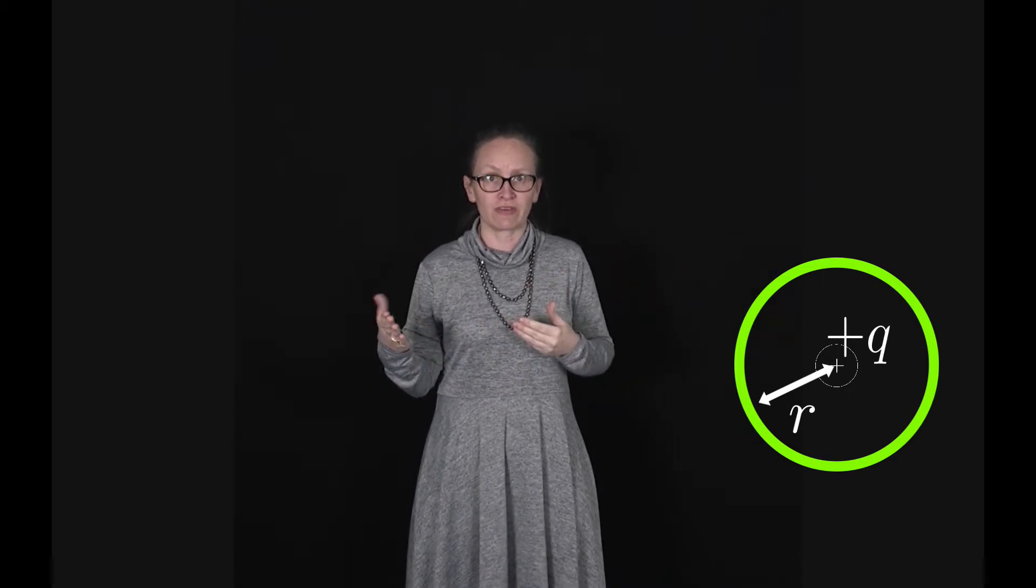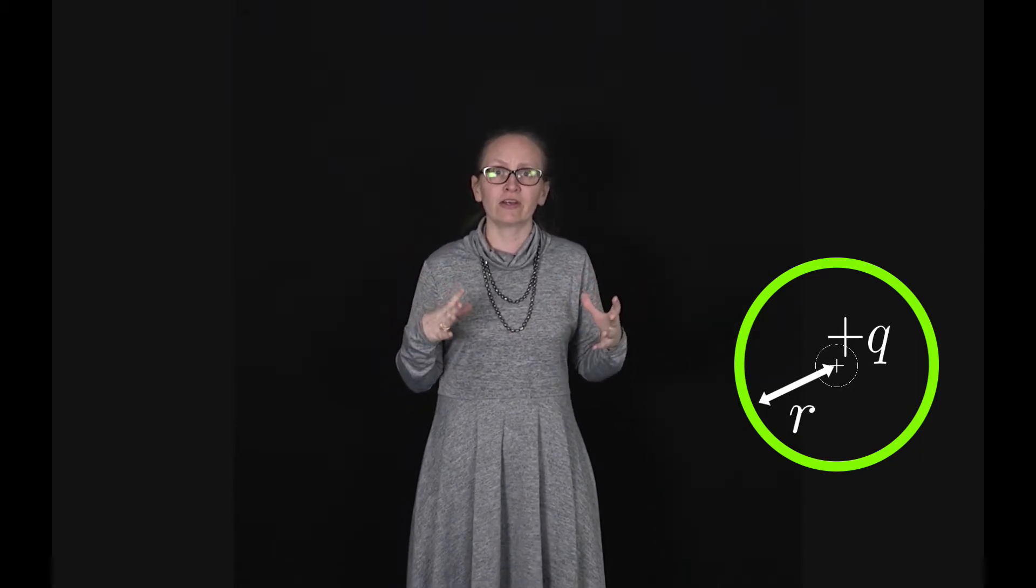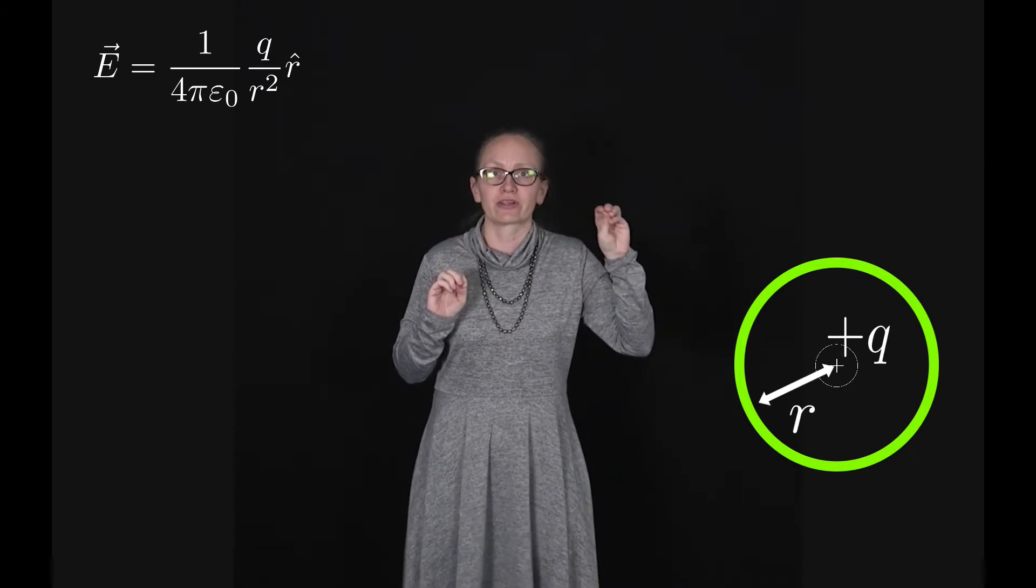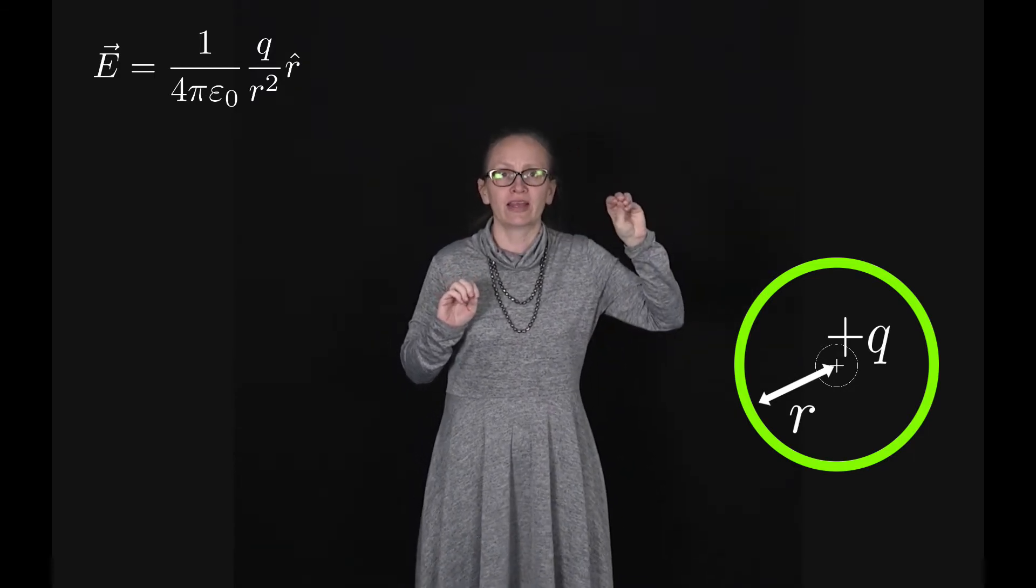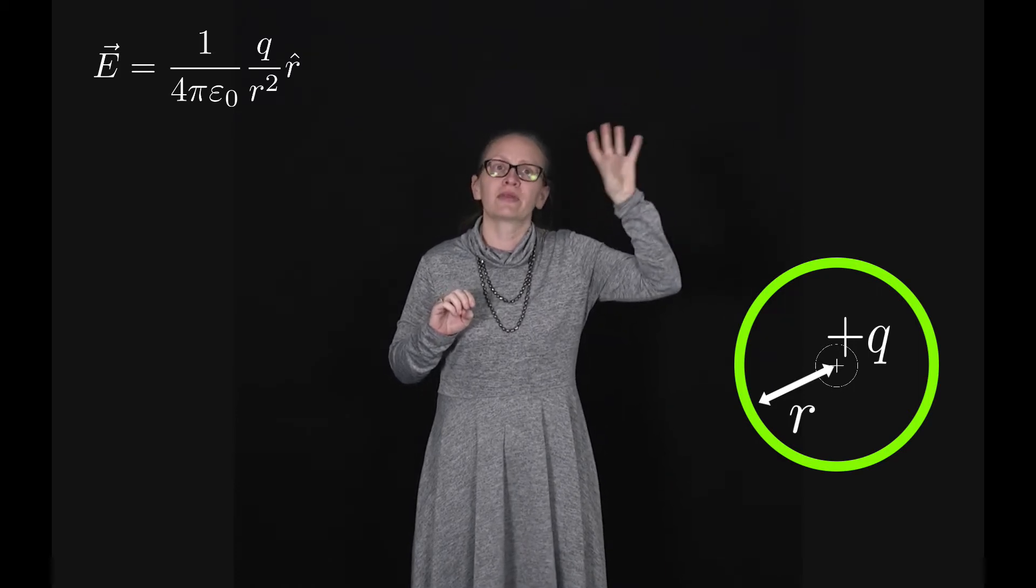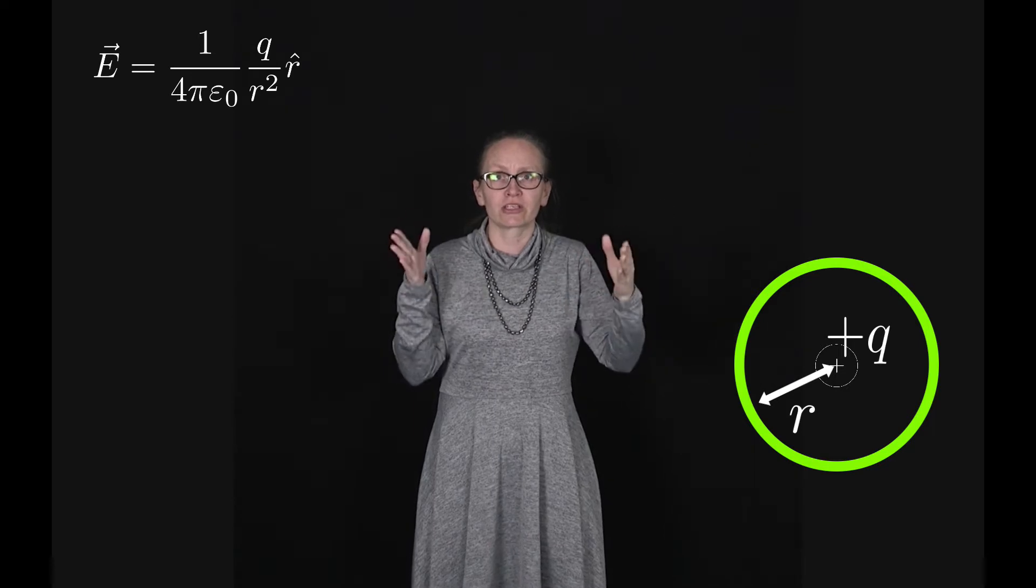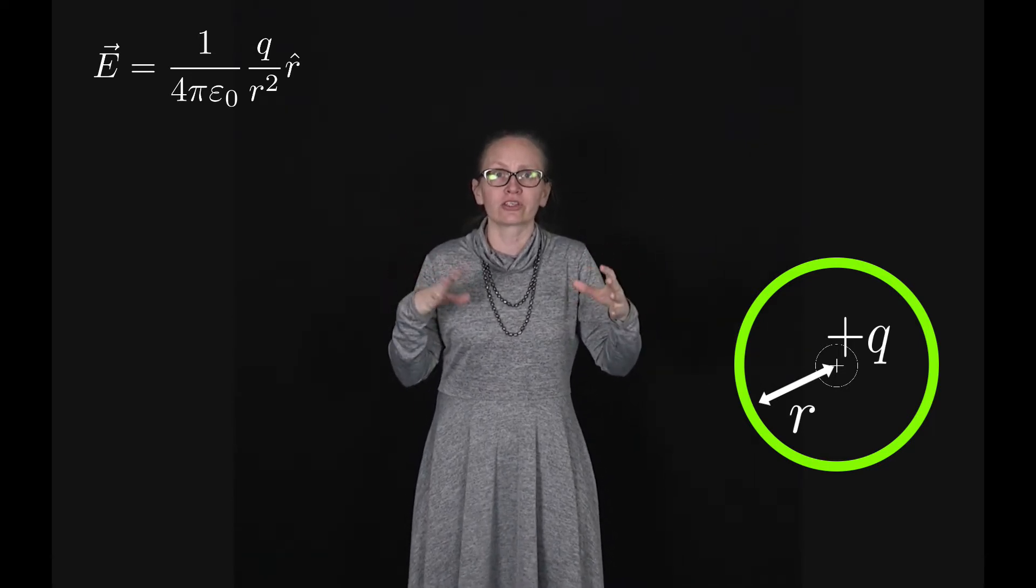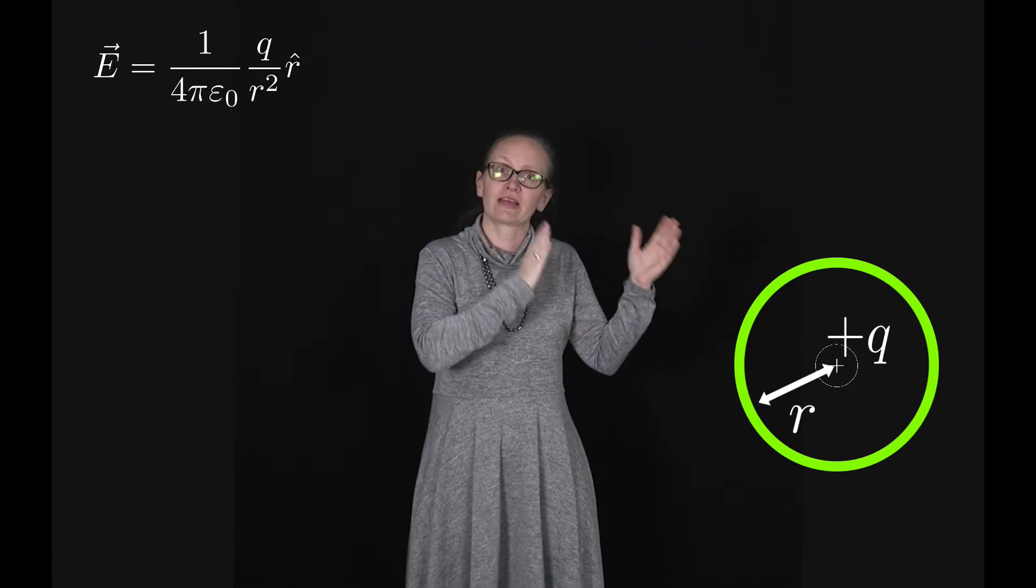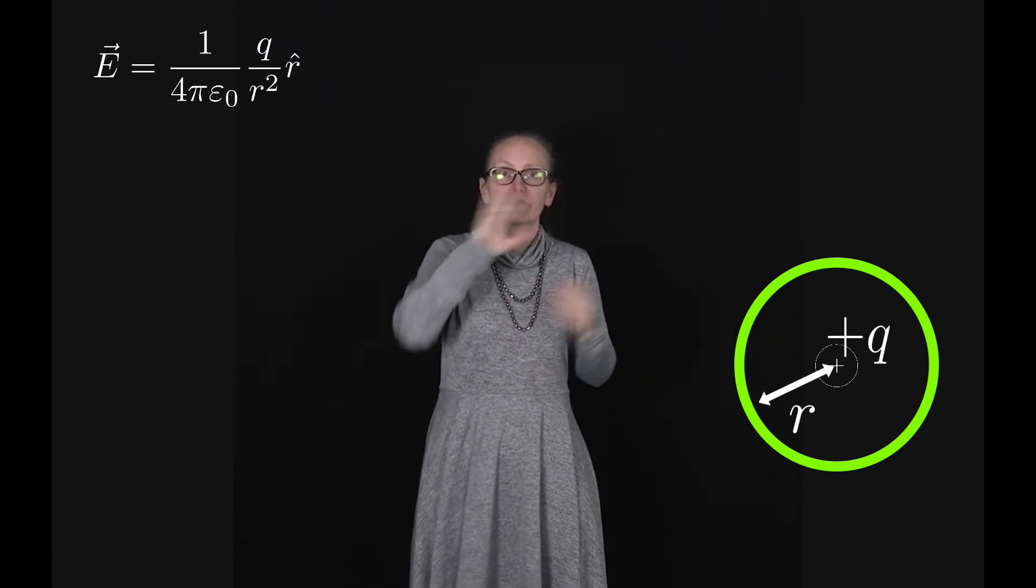At the surface of the sphere, the charge in its middle is creating an electric field which we can write as E equals 1 over 4π epsilon naught Q over r squared times r with a hat on. The r with a hat on is a unit vector in the radial direction. Because it's a unit vector, it's got magnitude 1. It's not contributing anything to the magnitude here, it's just giving it the direction which is away from that positive charge in the middle.